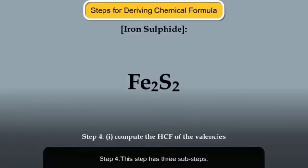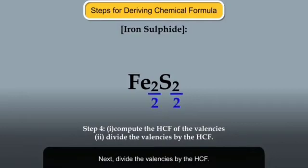Step 4. This step has three sub-steps. Firstly, compute the highest common factor of the valencies. Next, divide the valencies by the HCF. Here, the highest common factor of 2 and 2 is 2. So we divide the valencies by 2.